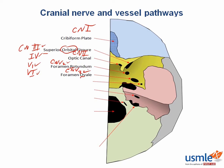The last foramen in the sphenoid bone is the foramen spinosum. This is actually not for cranial nerves, but the middle meningeal artery passes through here, so you should definitely know about it. Another mnemonic that may help you is ROS — which usually stands for review of systems — but here: rotundum, ovale, and spinosum.